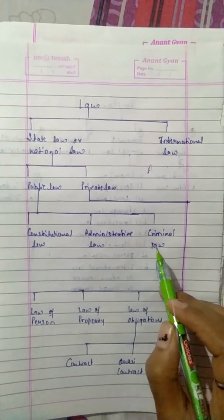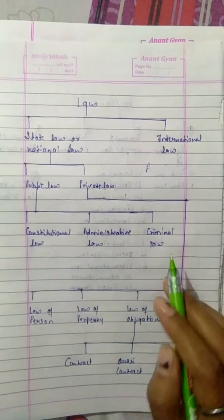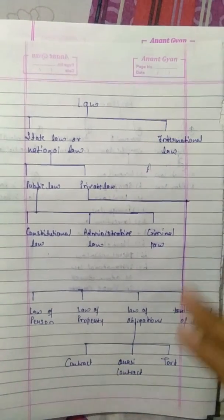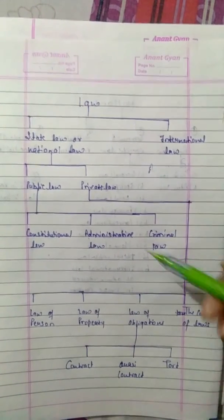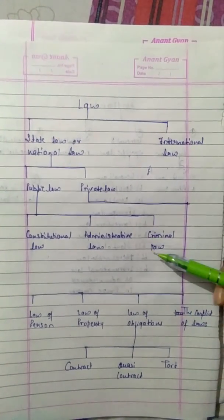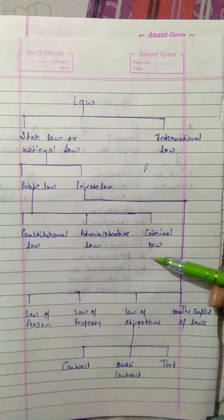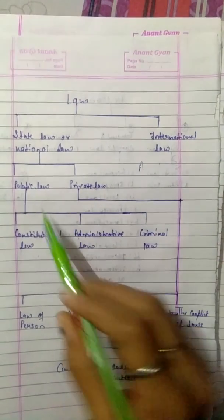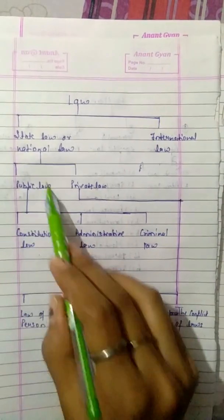What does the law do? In criminal law, there are offenders and punishments. So that is our public law.